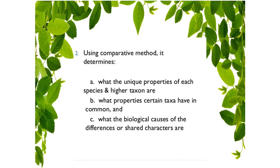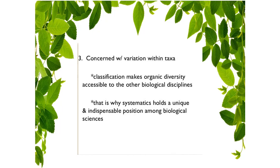The scope of plant systematic is also concerned with variation within taxa. Such variation is based on various factors — these might be biochemical processes, genetic makeup, or environmental conditions. These are the factors that may cause variation within a taxon. Classification makes organic diversity accessible to other biological disciplines, allowing us to arrange different groups and levels of organisms in a highly ordered manner.